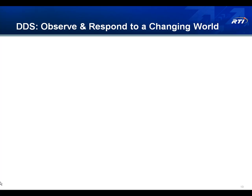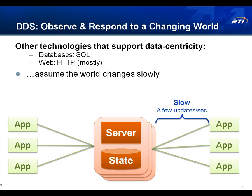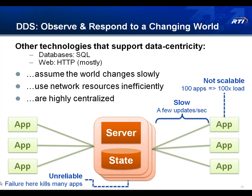DDS didn't originate the concept of data-centricity — there are other technologies that let you express architectures of this kind, such as relational databases or web protocols. But those technologies tend to assume that the objects in the world change pretty slowly, and when you're accessing that data they tend to use network resources inefficiently. For example, if you've got 100 applications that all need a particular piece of information, it's usually 100 times more expensive to get that information to them than if you only had one application, causing significant scalability and distribution challenges. Additionally, these technologies tend to be highly centralized, so failures at a central point can degrade or destroy the capability of a large number of applications.